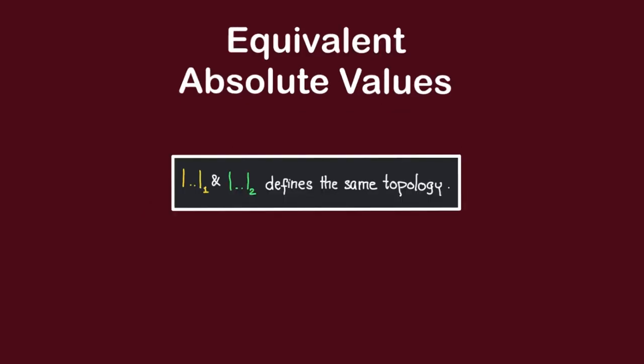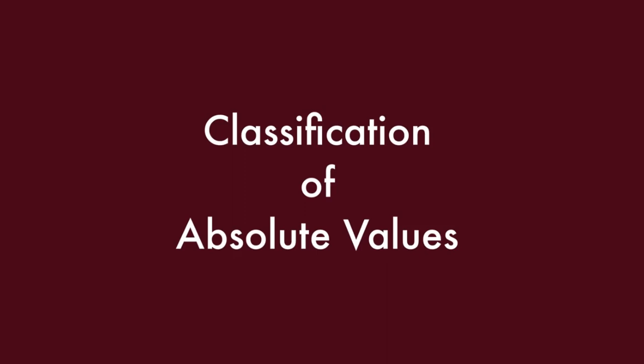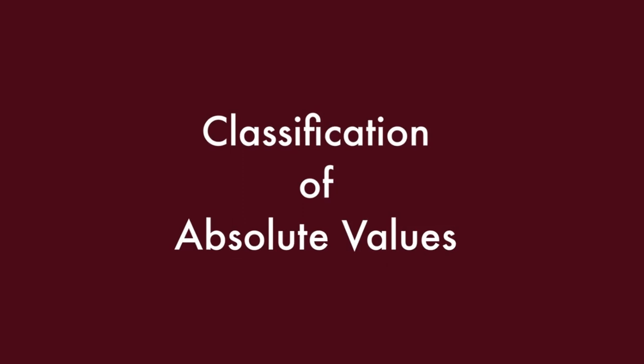In the last video, we have also shown that two absolute values are equivalent if and only if they are powers of each other. Now that we have a notion of equivalence, let us proceed to classify absolute values on a number field.